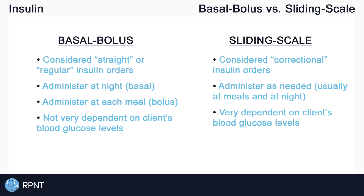However, sliding scale insulin orders are very dependent on the client's blood glucose level, and are usually ordered at each meal and sometimes at night. There is conflicting information on which form of insulin orders is considered best. Some clients may actually have both basal bolus orders and sliding scale orders, especially if their blood glucose levels fluctuate easily. A link is placed in the video description of a study that compares the two different order types.